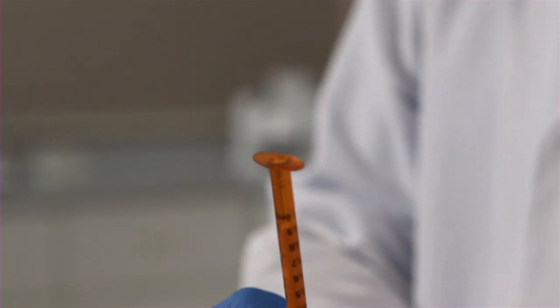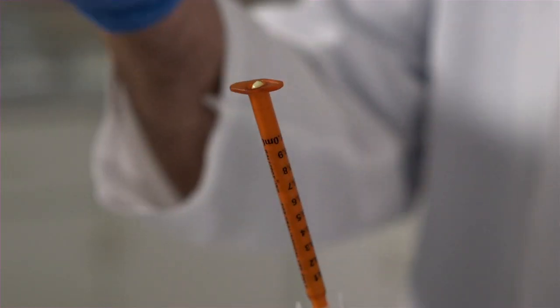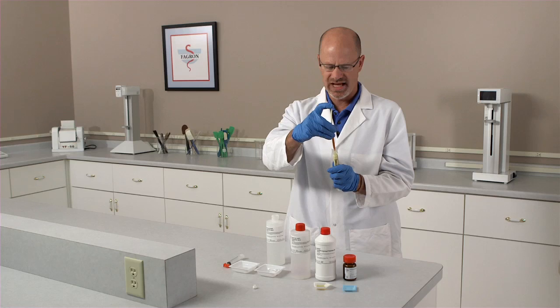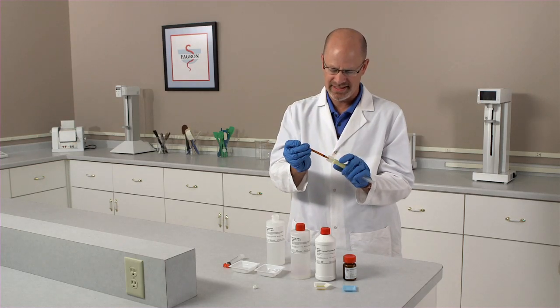We do this in order to get rid of the air that would be in the hub if you keep the plunger in the device. The last step is to replace the plunger and push down to the desired dose. In this case we'll do a 0.1 cc.